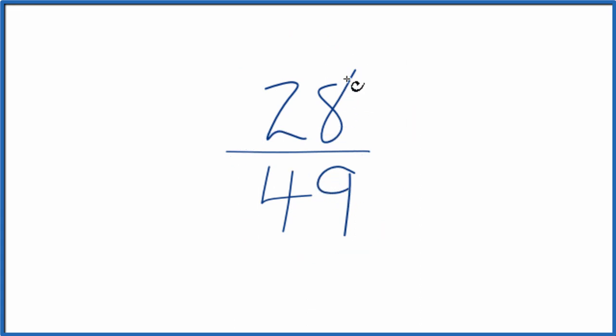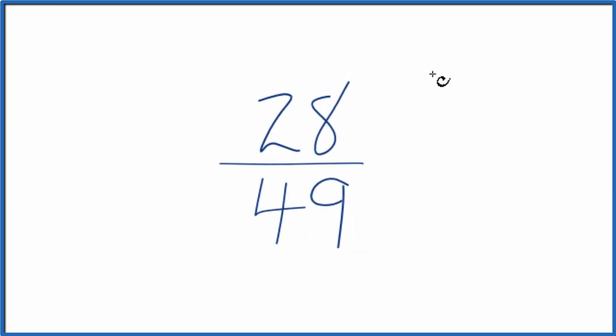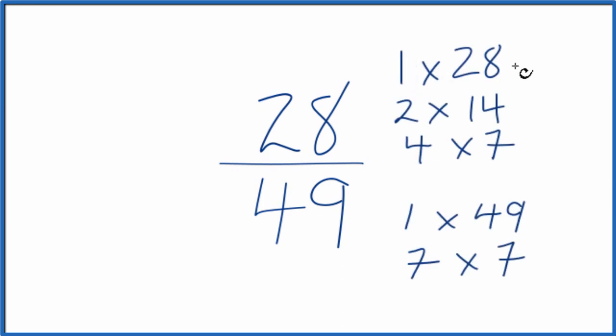So let's write the factors for 28 and 49. So these are the factors for 28 and then for 49. We're looking for the greatest common factor, and it looks like 7. That's our greatest common factor.